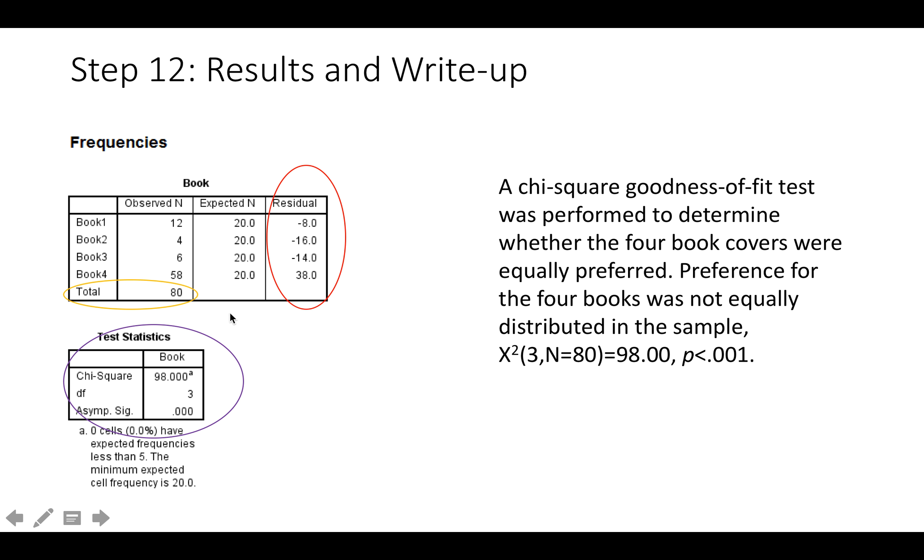We can see if the chi-square is significant by looking at the test statistics box. We see that in the last row, the p-value is .000, which is less than .05, and is therefore significant. The degrees of freedom are 3, and the chi-square value is 98.